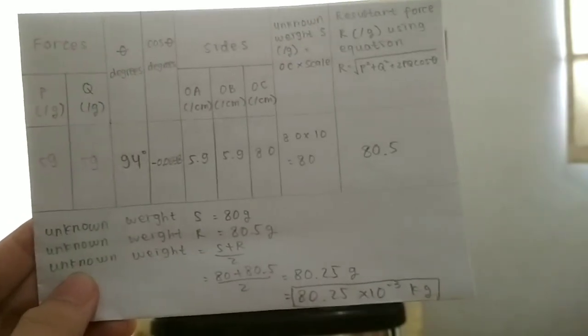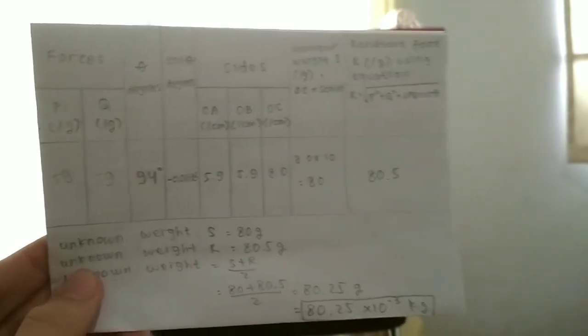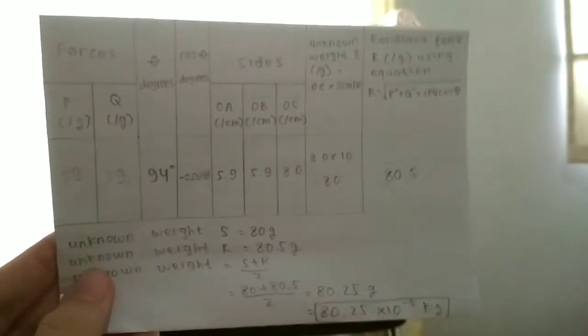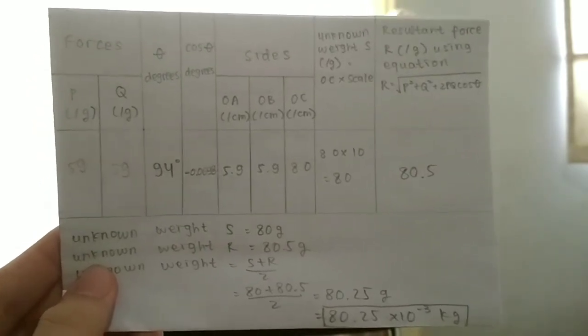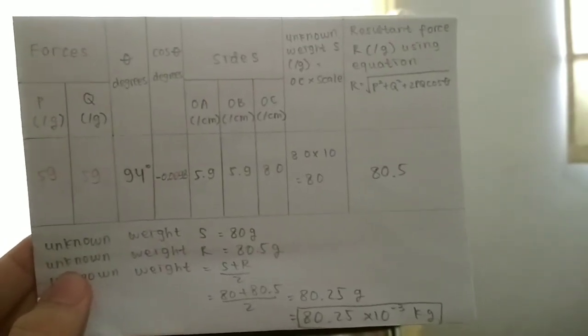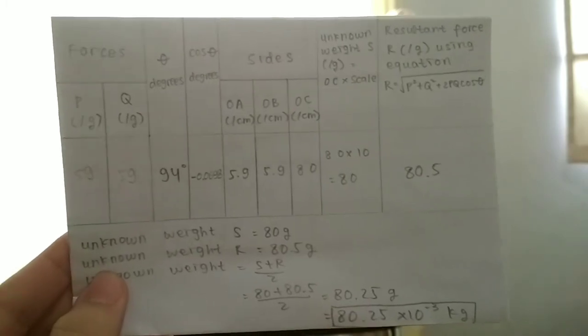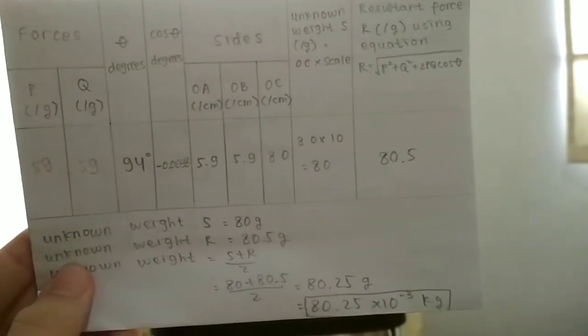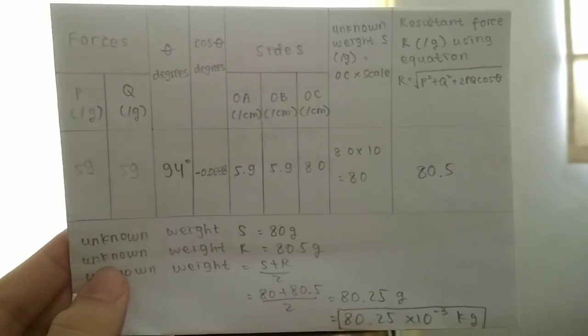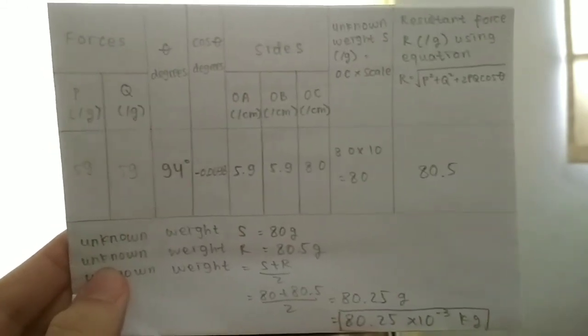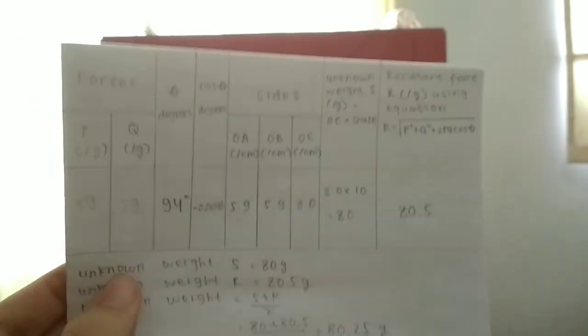So as you can see here, there is actually a difference in the unknown weight S and the unknown weight R. They are not exactly the same. One is 80 grams, one is 80.5 grams. And I think this may be caused by some errors and uncertainties, especially because this is just a homemade experiment. First of all, I think that the errors or uncertainties causing this difference is because I used a ruler and also a protractor. So a ruler approximately has an uncertainty of 0.2 centimeters, while a protractor approximately has an uncertainty value of one degree. So that may cause these differences in values.